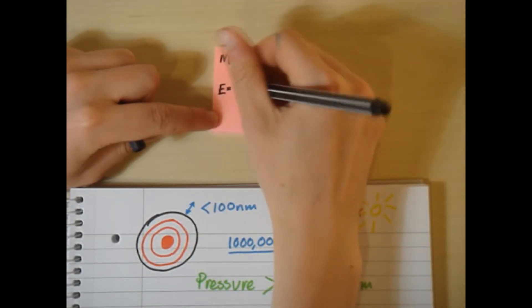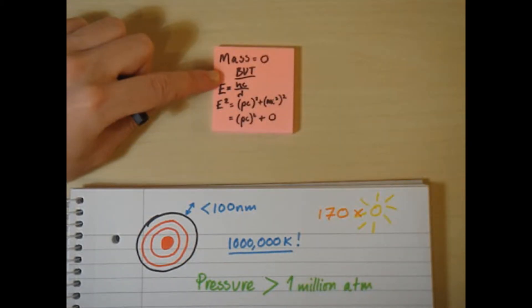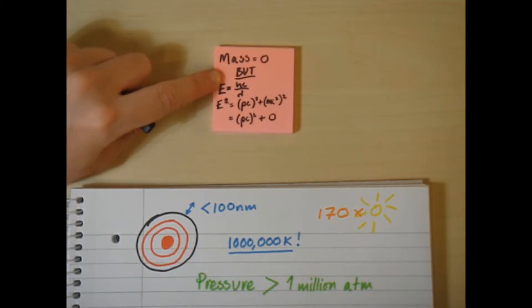Side note, photons have momentum despite mass equaling zero, because E equals hc over lambda, so they must have energy, and therefore momentum due to this second equation.